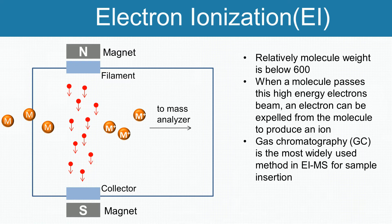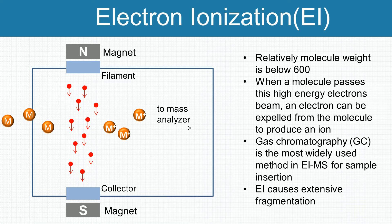Electron ionization causes extensive fragmentation, therefore the molecular ion is not observed for many compounds.